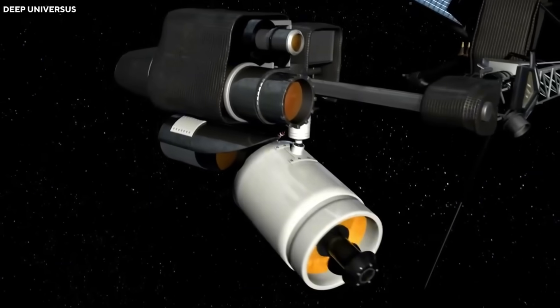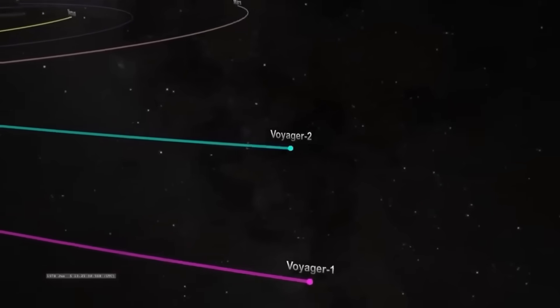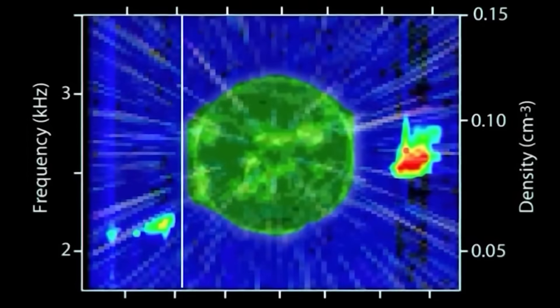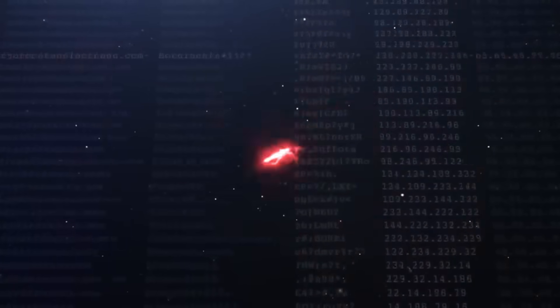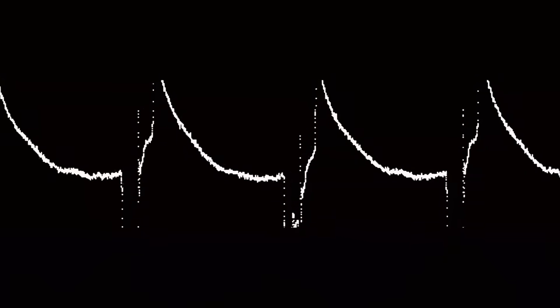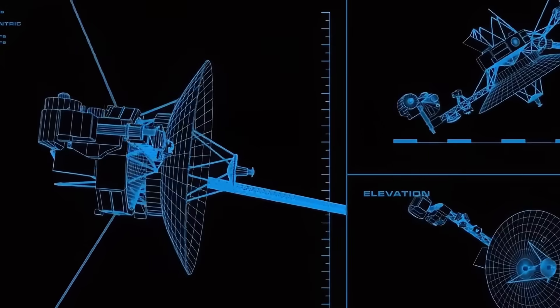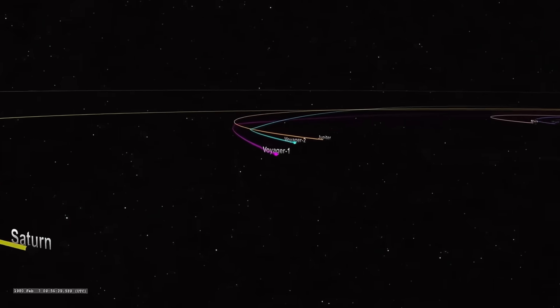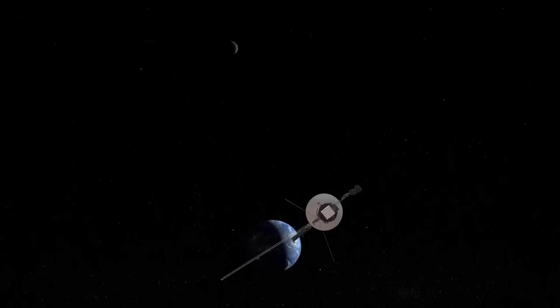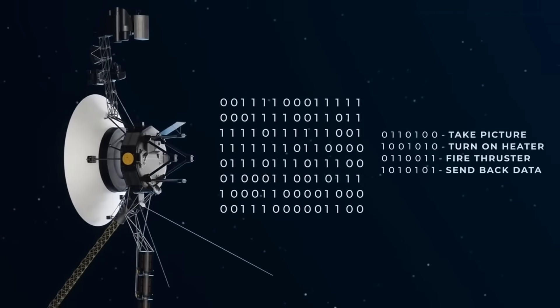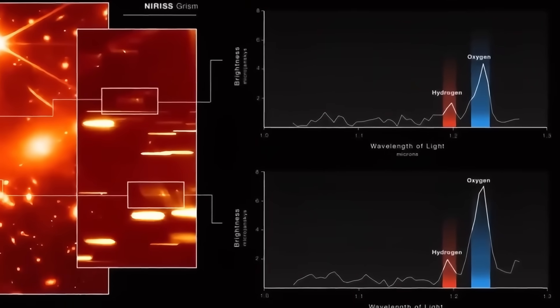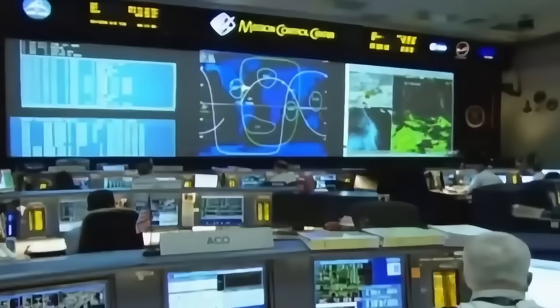To understand the full significance, we need to remember Voyager's extraordinary journey. Launched in 1977 on a grand tour of the outer planets, Voyager 1 revolutionized our understanding of the solar system. Its cameras captured Jupiter's great red spot in unprecedented detail. Its instruments discovered active volcanoes on Io, the first ever seen beyond Earth. At Saturn, it revealed the complex structure of the planet's magnificent rings. After these planetary encounters, Voyager continued outward. In 2012, it crossed the heliopause, becoming humanity's first interstellar spacecraft. Today, it travels more than 38,000 miles per hour, now over 15 billion miles from Earth.